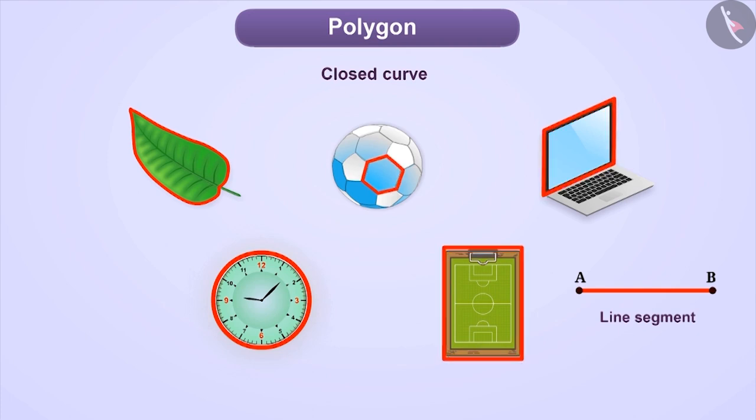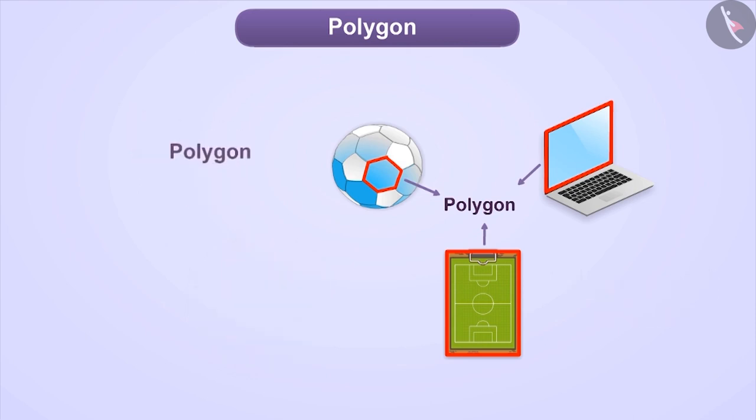If we break the word polygon, we get two words, poly and gon. Poly means many and gon means sides or angles, which means a figure that has many sides is called a polygon.